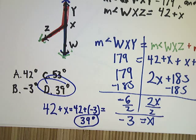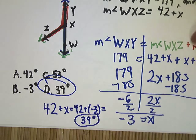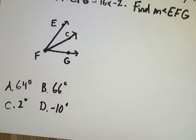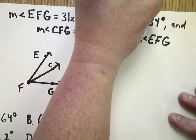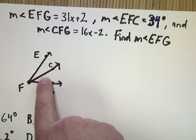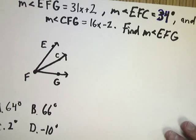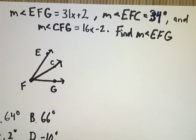Now, if you're interested, I'll throw an extra problem up here and let you take a shot at it. I'll have another one of these up so that you can see the solution. So, this is the one we're going to work on. The measurement of angle EFG is equal to 31X plus 2. The measurement of angle EFC is equal to 34. It's supposed to be a 34. It's the worst written 34 ever. And the measurement of angle CFG is equal to 16X minus 2. Your goal is to find the measure of EFG using this drawing. The answer choices, 64 degrees, 66 degrees, 2 degrees, and negative 10 degrees. So, give it a shot and see how well it works for you.